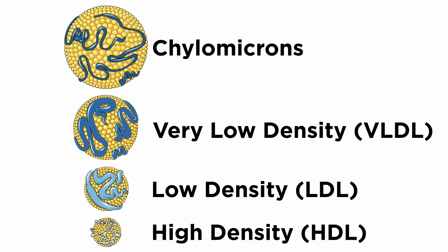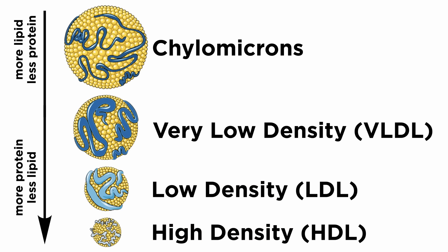There are four types of lipoproteins with various roles in cholesterol biology: chylomicrons, very low-density lipoproteins or VLDL, low-density lipoproteins or LDL, and high-density lipoproteins or HDL. They are named in reference to their protein-to-lipid ratio, with lower-density lipoproteins having more lipid versus protein content.